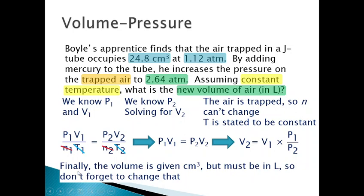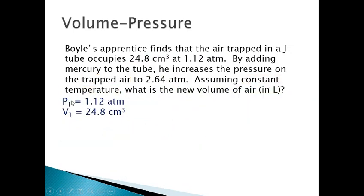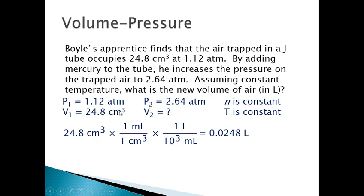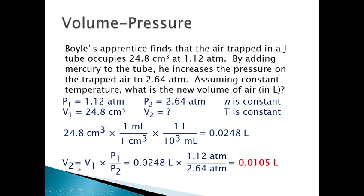Convert cubic centimeters to liters using the relationship: 1 mL = 1 cm³, then convert milliliters to liters. Now plug and chug. We have our volume in liters, our pressures of 1.12 and 2.64 atmospheres already in the correct units, so just plug them into your calculator appropriately.